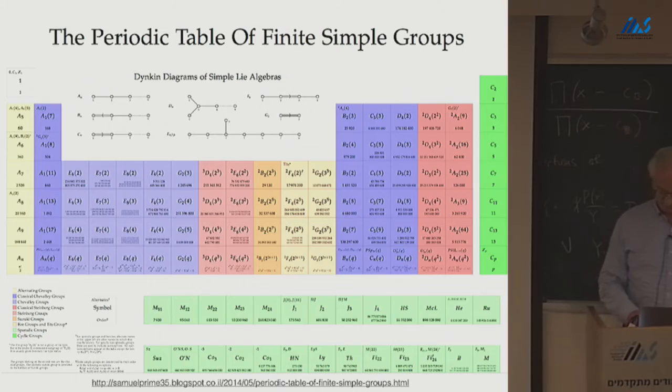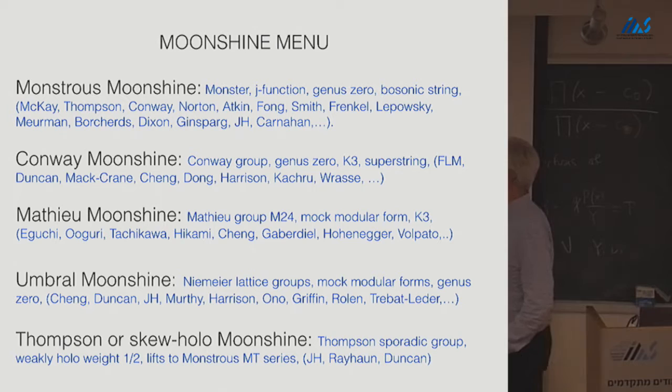So here's kind of a menu of moonshines that exist now. This is supposed to be like going to a fancy restaurant where they just say chicken, but then they have a list of exotic ingredients that you've never heard of that accompany it. So, monstrous moonshine involves the monster, the J function, genus 0. Then there's something called Conway moonshine that involves the largest Conway sporadic group. There's Matthew moonshine. There's umbral moonshine, which involves Niemeyer lattice groups, Mach modular forms.